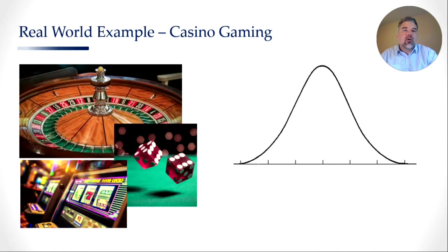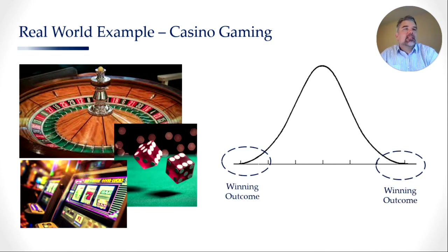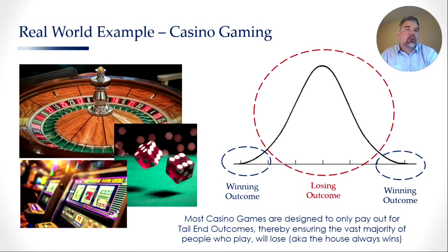A good real-world example of this is casino gaming. Essentially, every game in a casino is designed so that the odds of winning favor the house. The games are designed so that the winning outcome sits on the tail end of the probability distribution curve, which means that for every one person who wins at a casino, there are literally thousands of people who lose. Also, when an individual does experience a big win or a prolonged hot streak, if they keep on gaming, then over time their average win-to-loss ratio will always regress in favor of the casino.